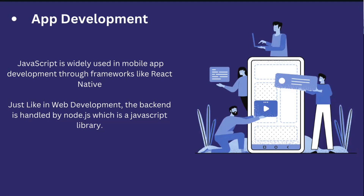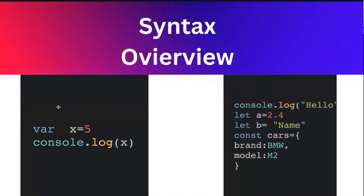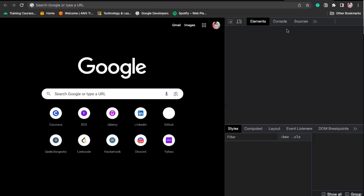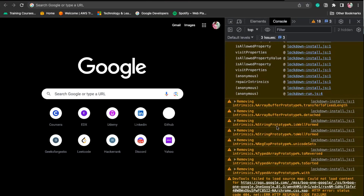Let me give you a basic syntax overview. Variables are declared using var, let, and const — these are keywords used to declare variables. If you want to print anything to the console or screen, you use console.log, which prints whatever you want. There are two main ways to run JavaScript: you can go to your developer tab and if you click on Console, you can run JavaScript there; or you can run JavaScript in any text editor. I'll be using VS Code, but you can also use Notepad, Sublime Text, or Atom.